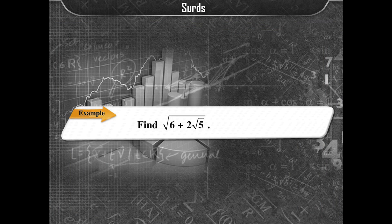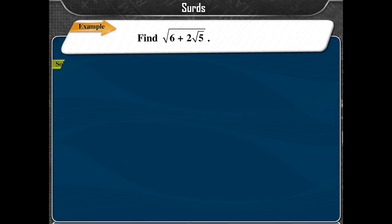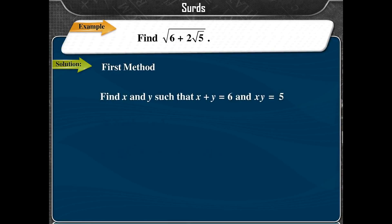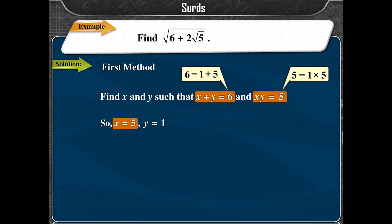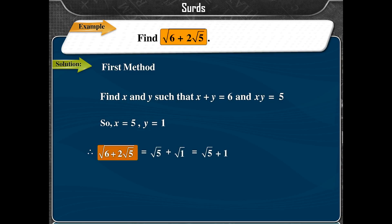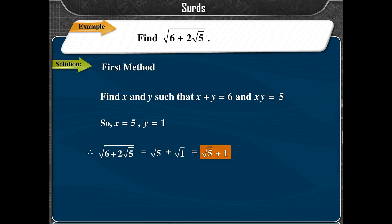Example: Find square root of (6 + 2√5). Solution — Method 1: Find X and Y such that X + Y = 6 and XY = 5. So X = 5 and Y = 1. Therefore, √(6 + 2√5) = √5 + √1 = √5 + 1.